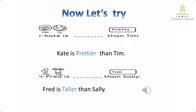Now let's try again. We're going to make a comparison between these persons — Kate and Tim, and Fred and Sally. En la primera, Kate and Tim nos dan la palabra 'pretty', que es bonito. Lleva dos sílabas y termina en 'y', entonces cambiamos la 'y' por 'i' y agregamos 'er'. Nuestra oración: Kate is prettier than Tim. Kate es más bonita que Tim.